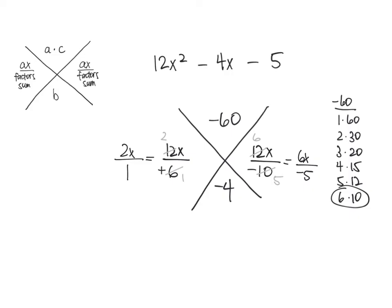So my reduced ratios are 2x over 1, and this one is going to be 6x over negative 5. So this is the parts that are really important once you reduce those ratios, because this is my binomial. So 2x plus 1 times 6x minus 5.